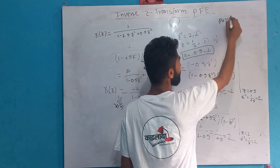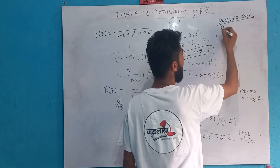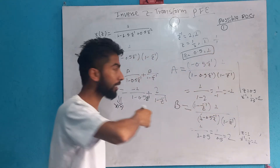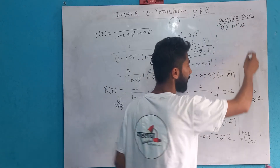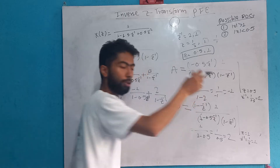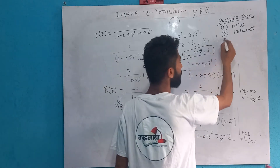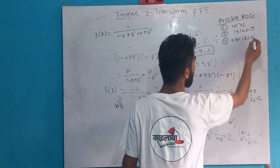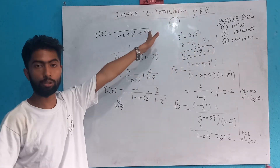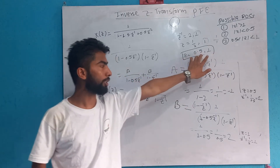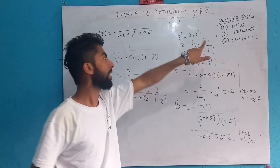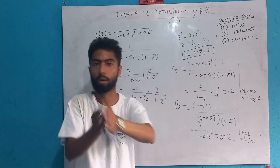All possible ROC. How can we get to know the possible ROC? The poles are at 0.5 and 1. This means that |z| greater than 1, or |z| less than 0.5, or |z| in between 0.5 and 1. So there are 3 possible ROC cases.